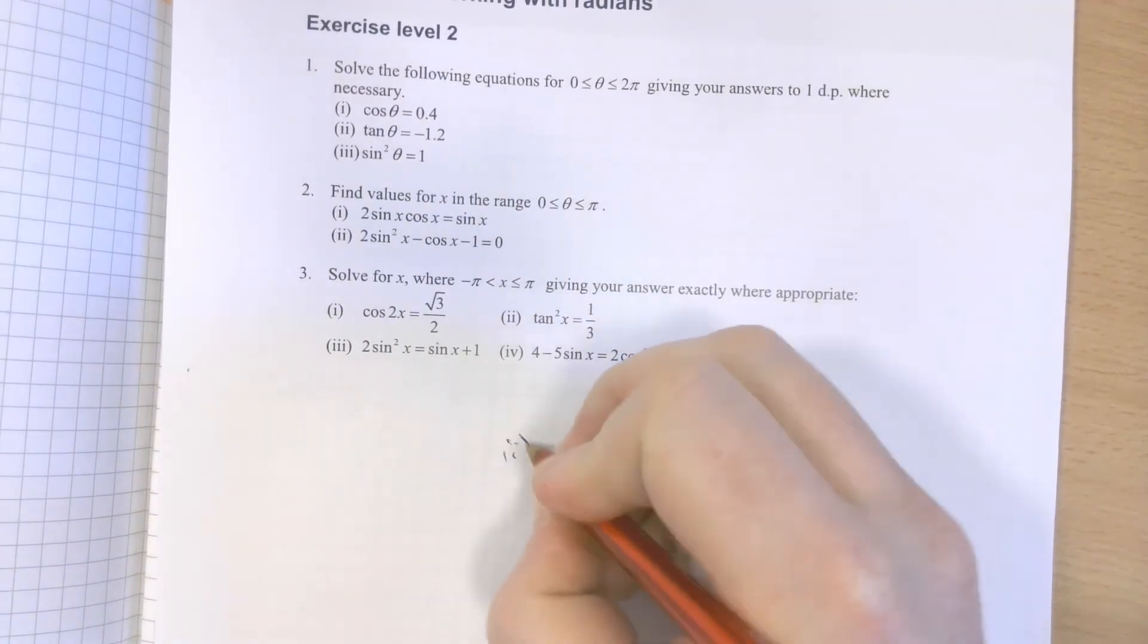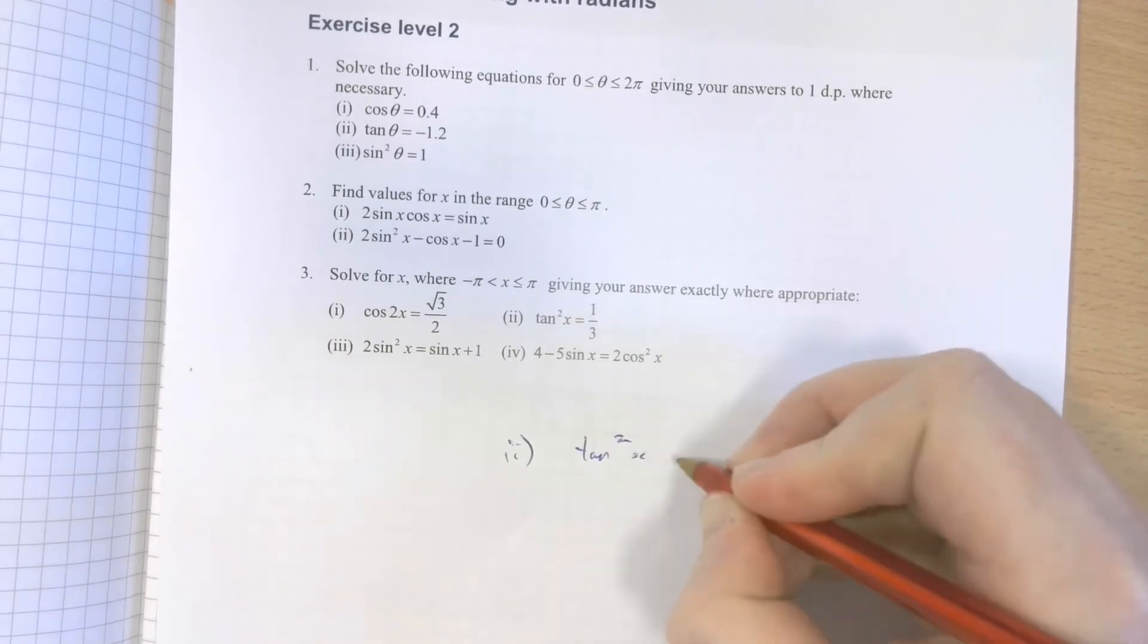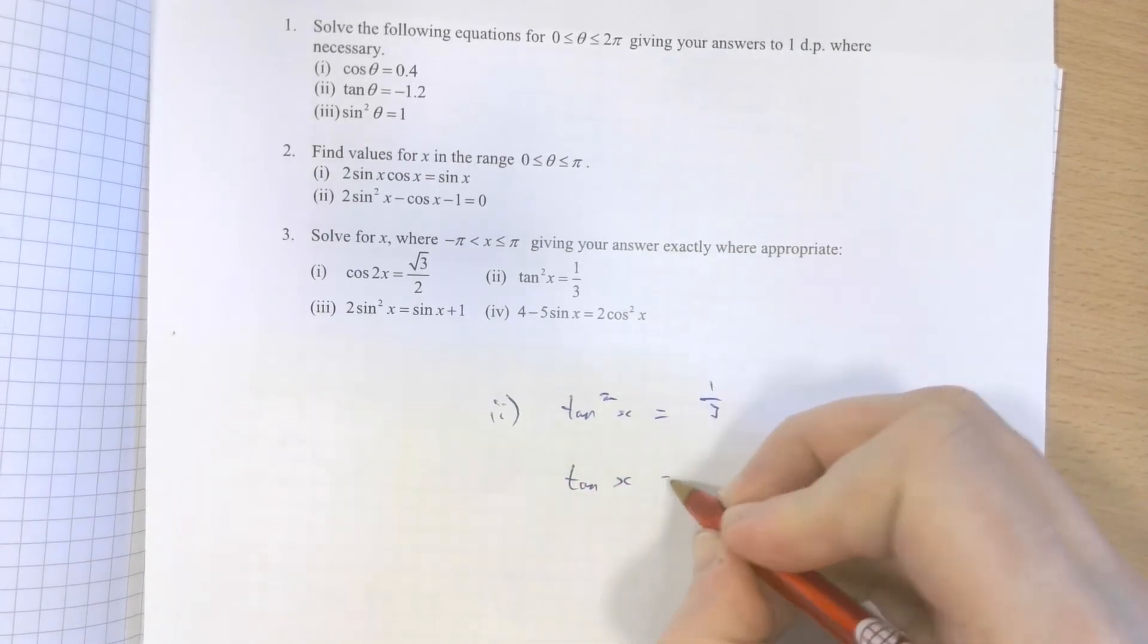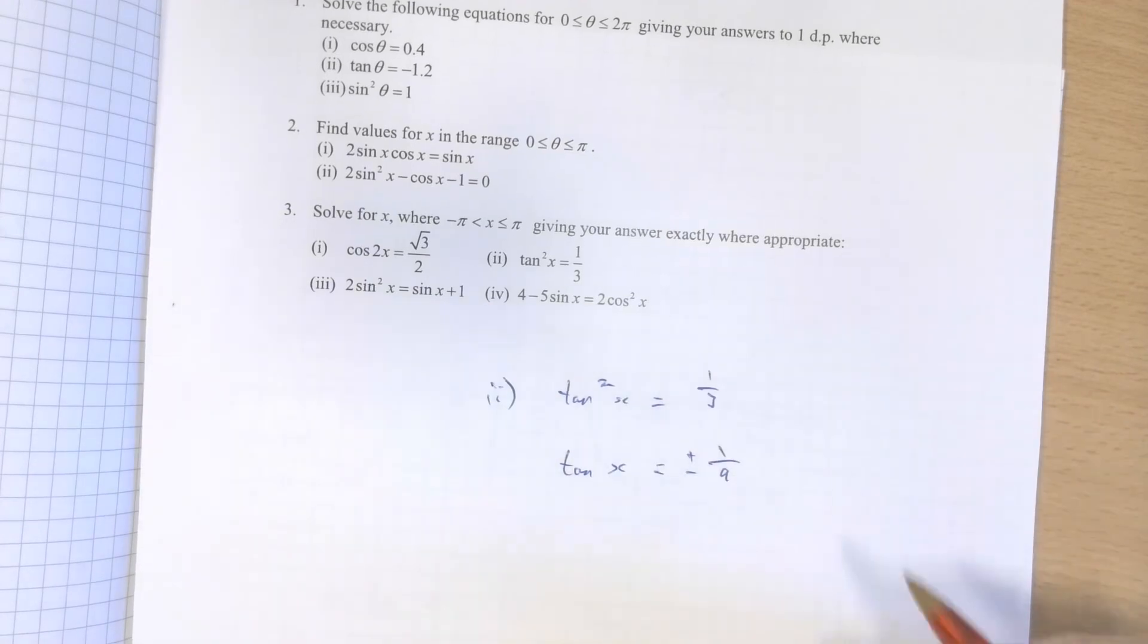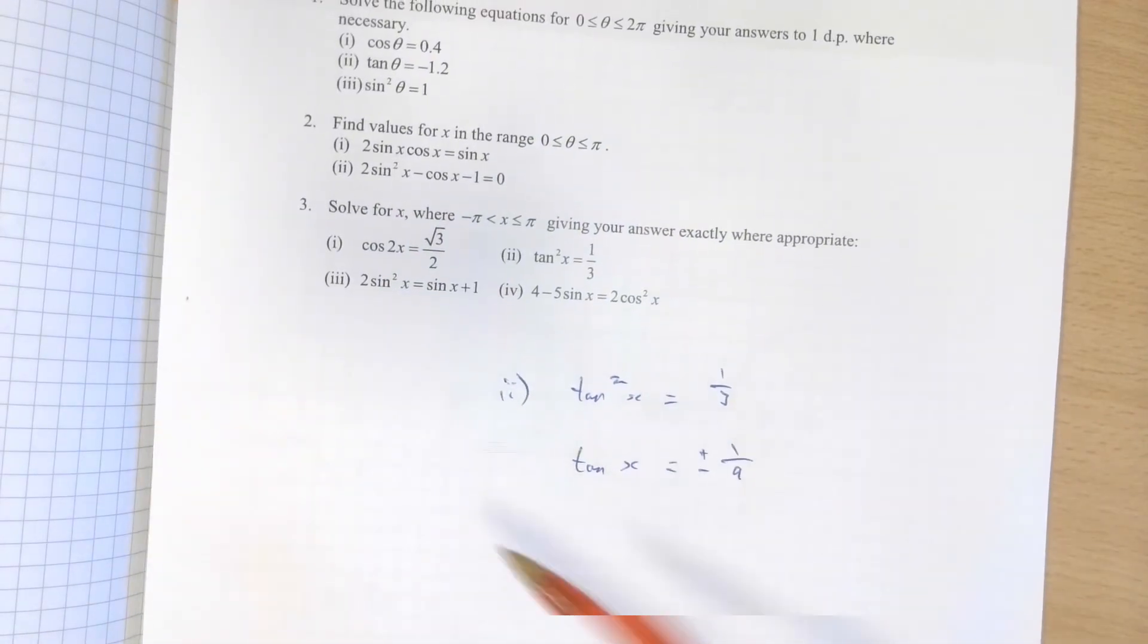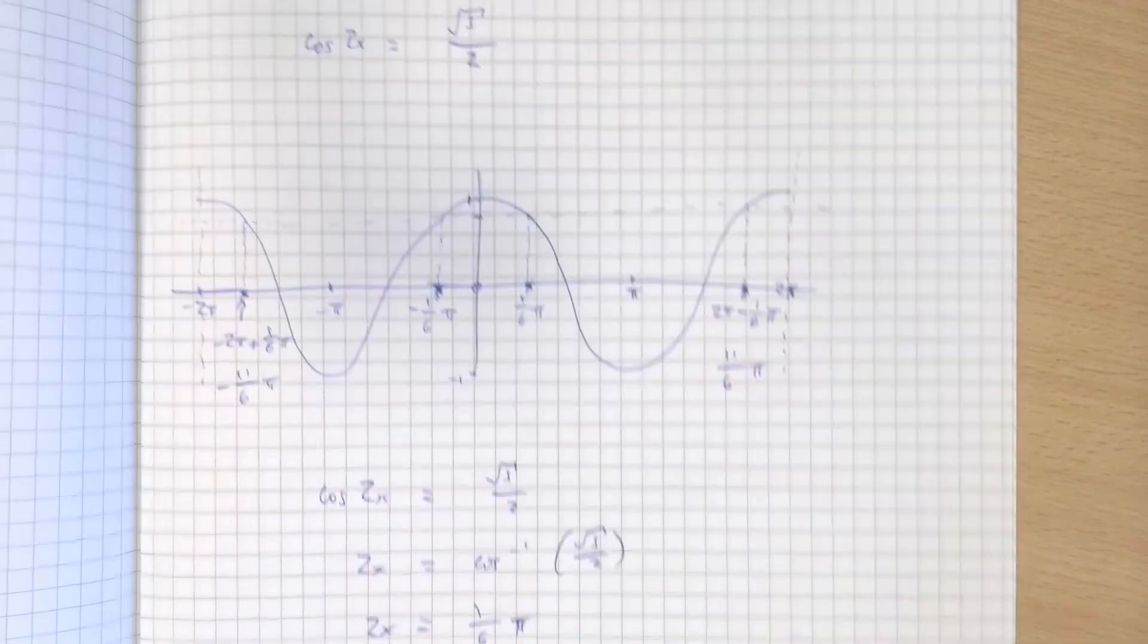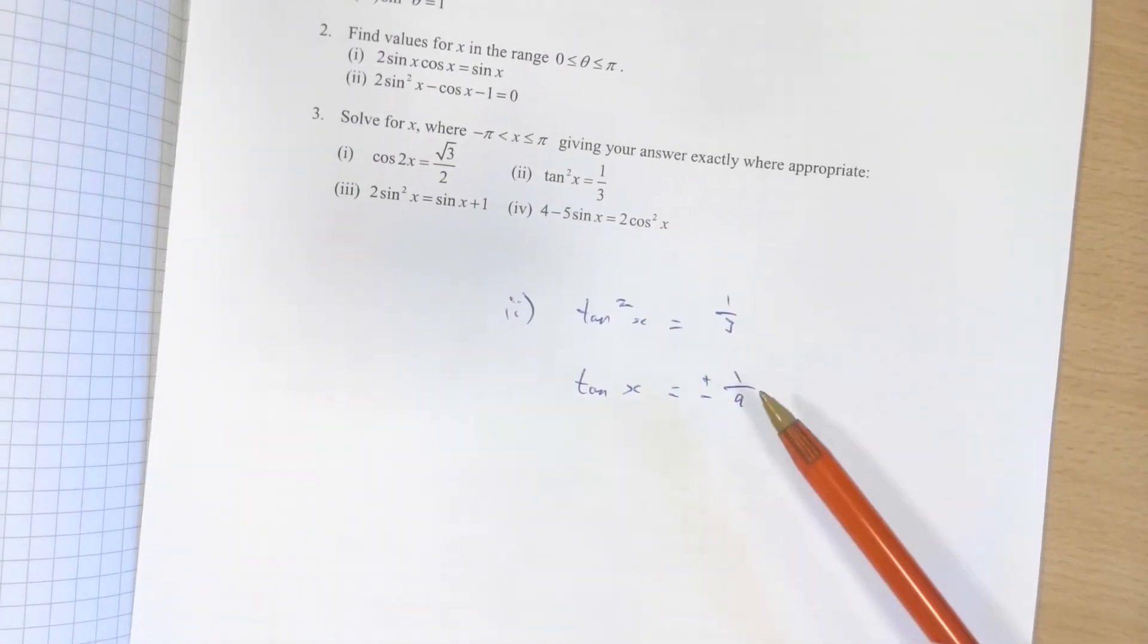Let's take a look at question two here. Tan squared x equals 1/3. So if you square root both sides, you get tan x equals 1/9. And there's going to be two values, one positive and one negative. You're going to deal with that in exactly the same way as you did for this question, just with the tan graph.